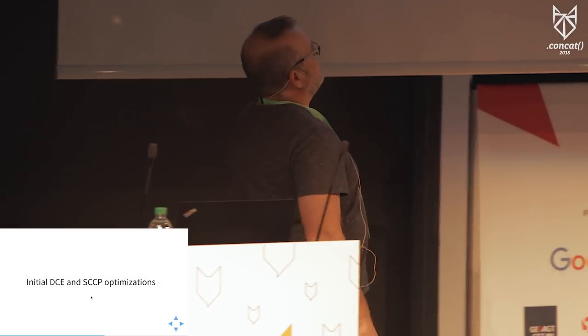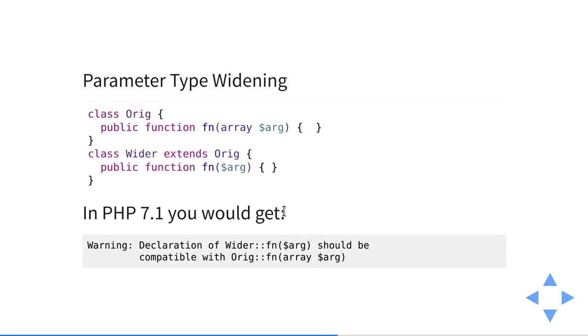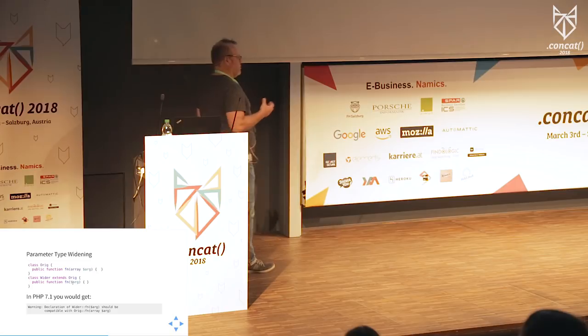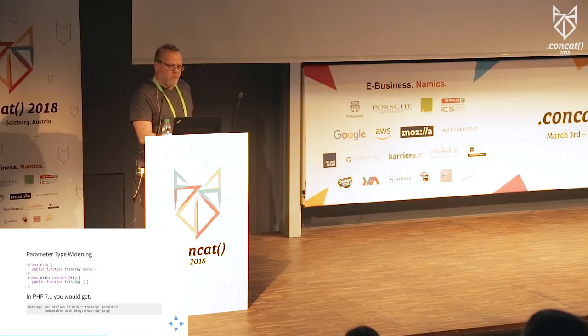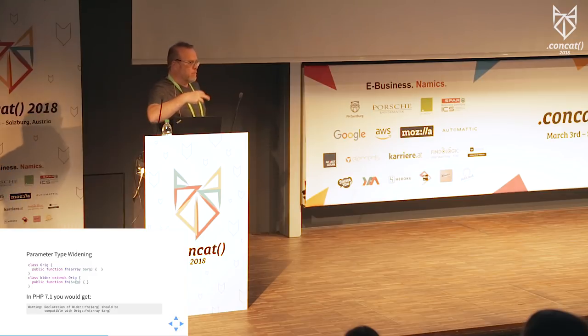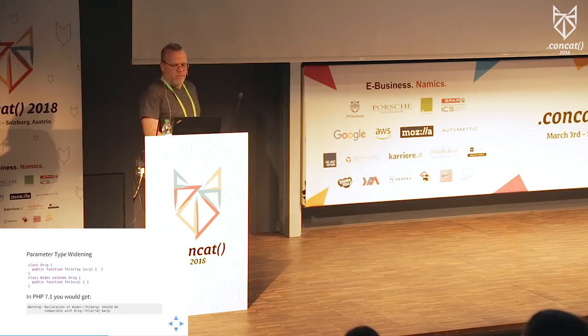So what's new in PHP 7.2, the current version? We're doing some initial DCE and SCCP optimizations — I'll talk more about those shortly. One of the more easily understood features is parameter type widening: if you're extending a class, you're allowed to loosen the restrictions in the child class. The parent says a parameter should be an array; the child can still accept an array but also allow other types. In PHP 7.1 this would give a warning, but according to the Liskov Substitution Principle there's no reason you can't widen the type.